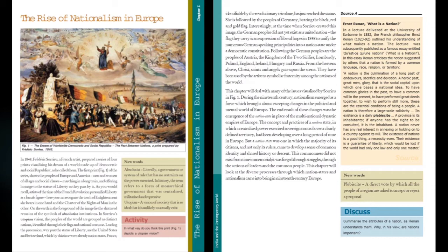The end result of these changes was the emergence of the nation-state in place of the multinational dynastic empires of Europe. The empires were swept away and the nation-state concept came into Europe. The concept and practices of a modern state, in which a centralized power exercises sovereign control over a clearly defined territory, had been developing over a long period of time in Europe.